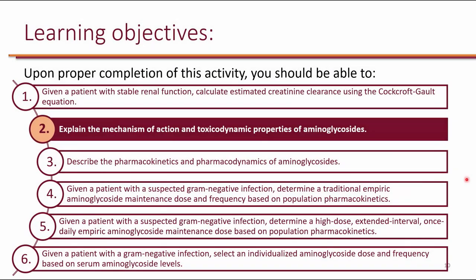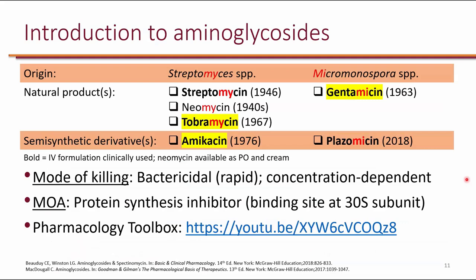Our next learning objective is to explain the mechanism of action and toxicodynamic properties of aminoglycosides. Most aminoglycosides are natural products. Their naming is based on the organism from which they are derived: streptomycin, neomycin, and tobramycin are derived from Streptomyces species. Gentamicin is derived from Micromonospora species. Amikacin and plazomicin are semi-synthetic derivatives developed in the lab.